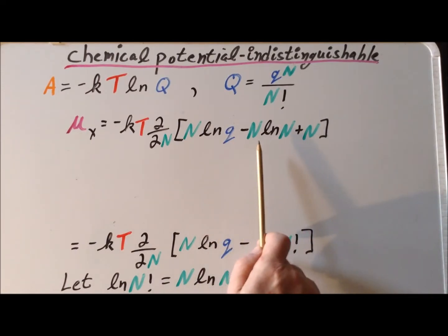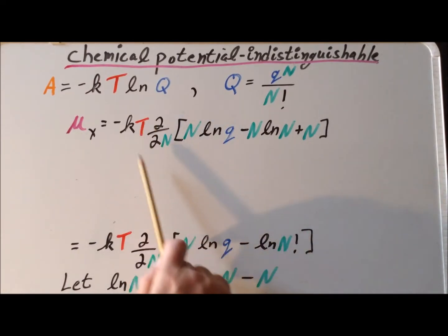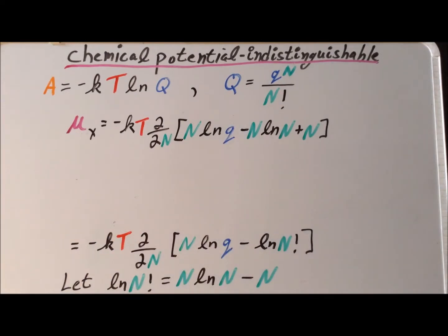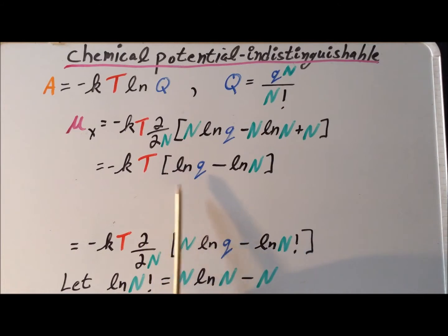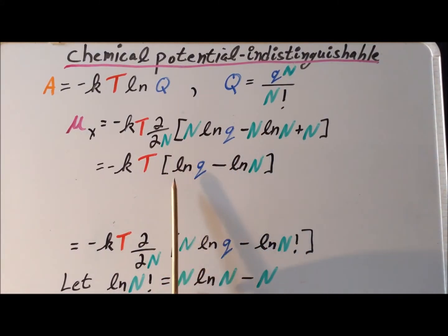Now that we have no factorials, we can calculate the partial derivative. This gives us for the chemical potential: minus KT times the expression natural log of q minus the natural log of N, the number of particles in the system.